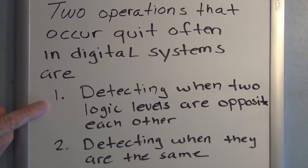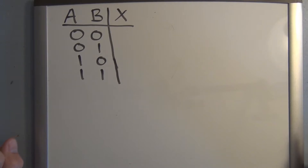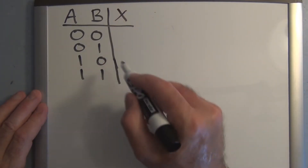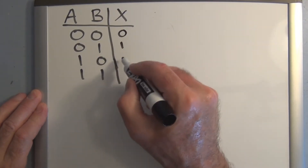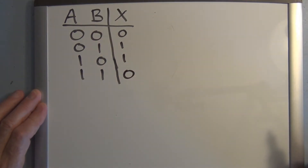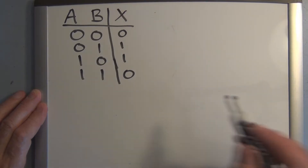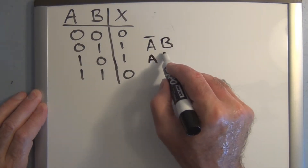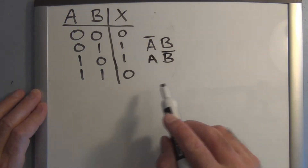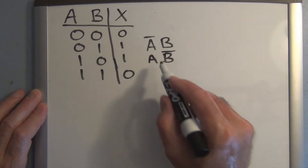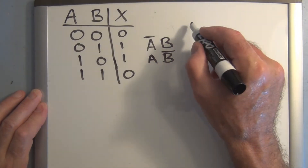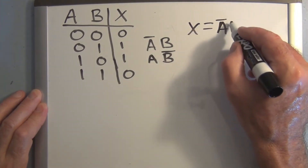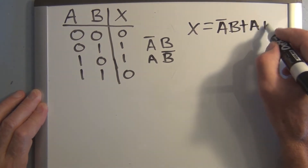The first condition we want to detect is when two logic levels are opposite each other. The first circuit we want to develop will detect when two inputs A and B are opposite each other, so the output X would be high when A and B are opposite. The AND term for each case would be A-not-B and A-B-not, and we OR these two AND terms together, so X equals A-not-B OR A-B-not.